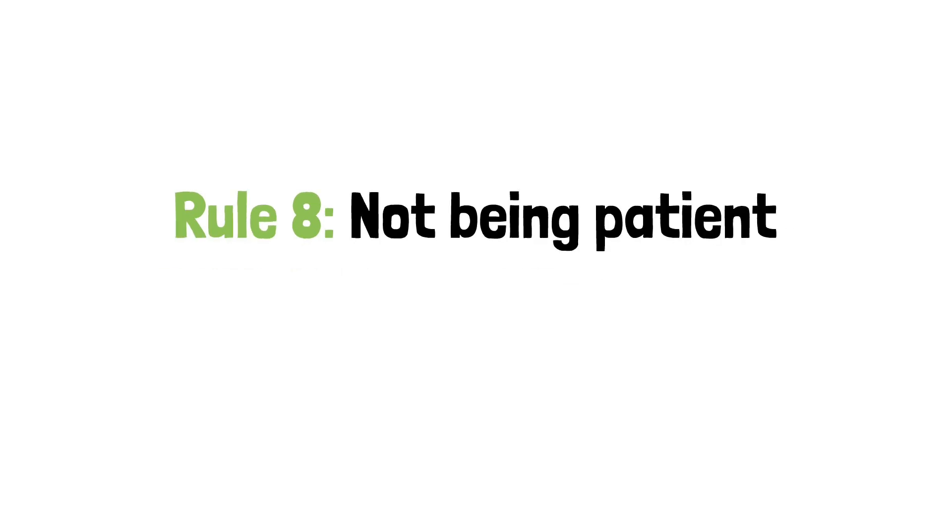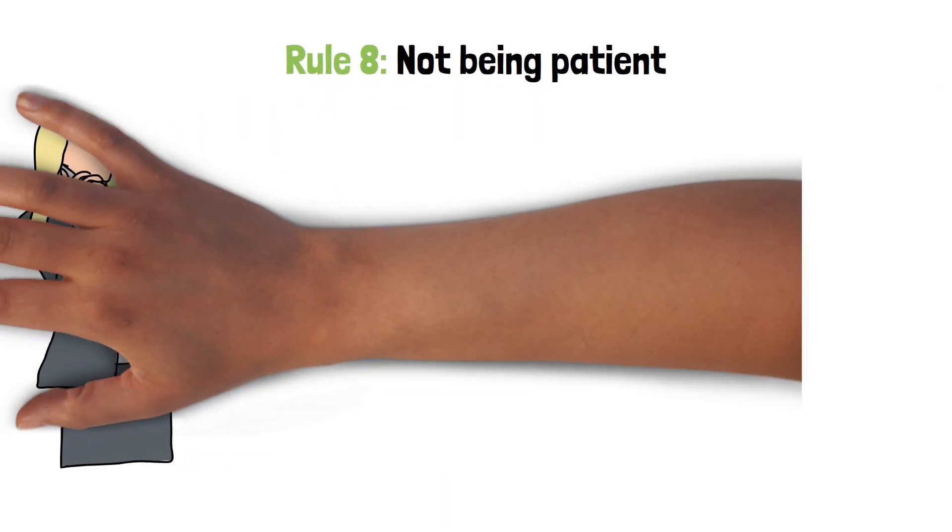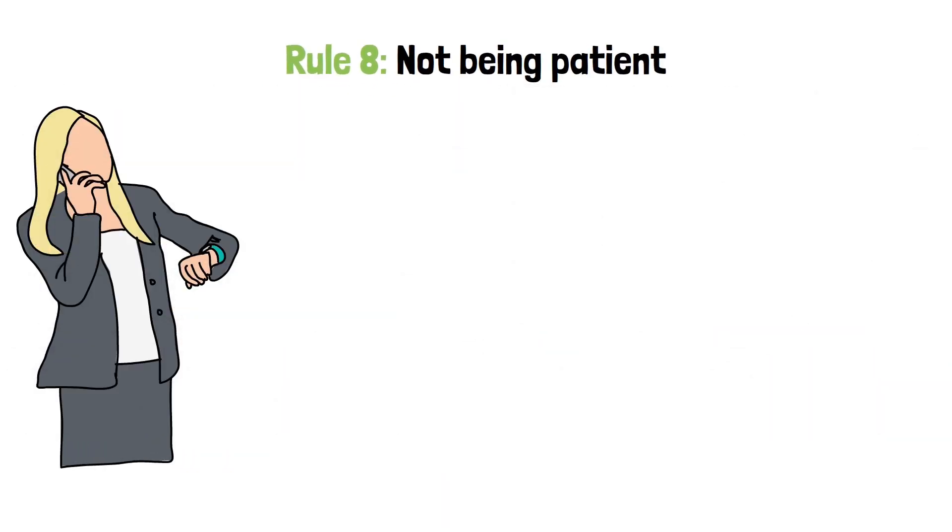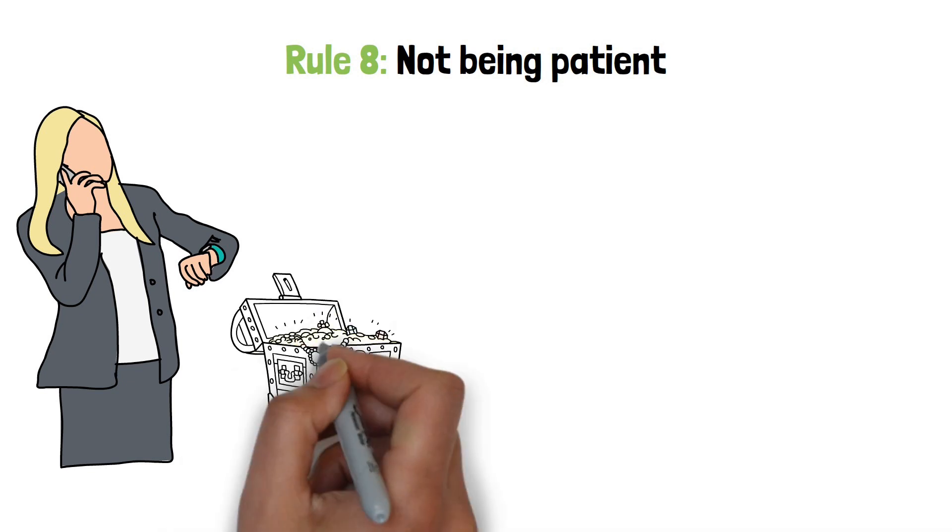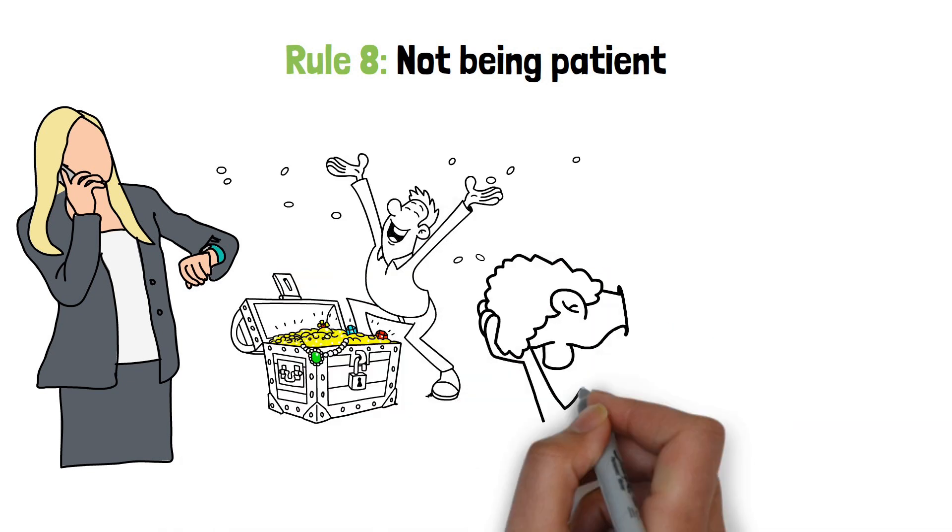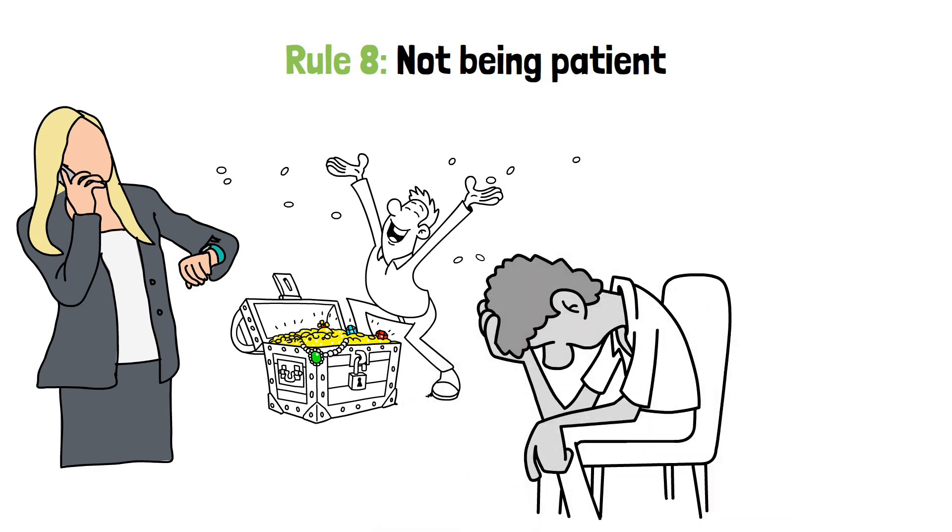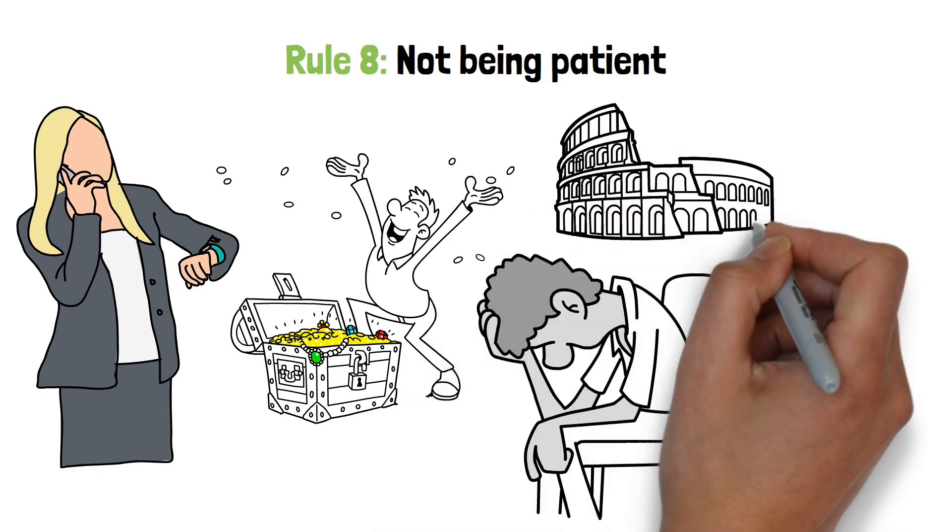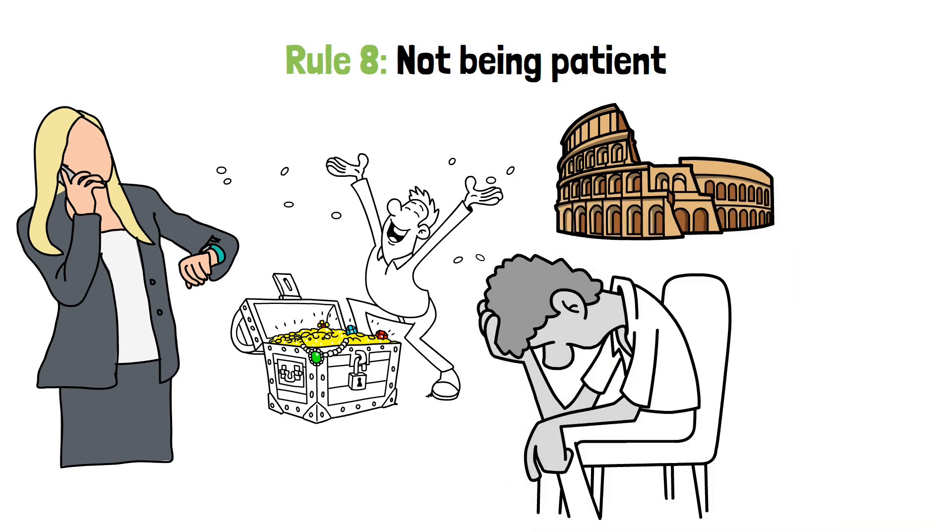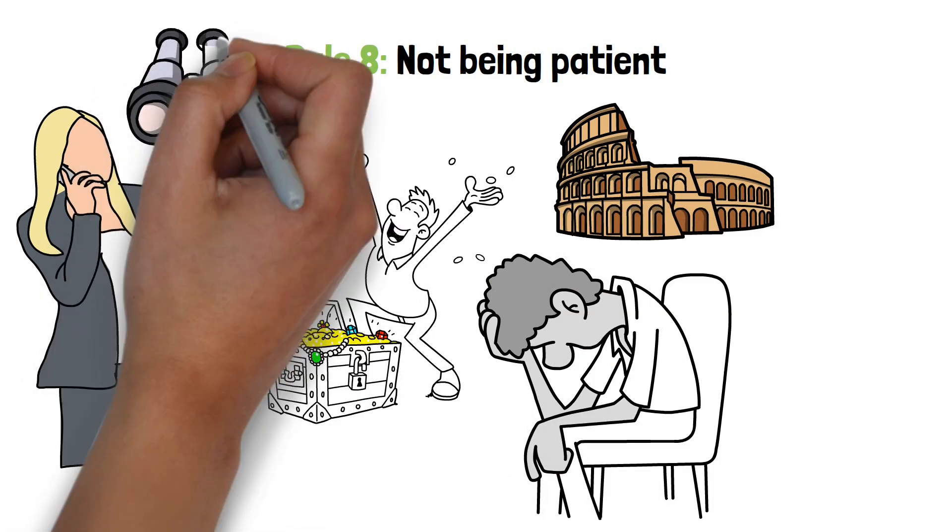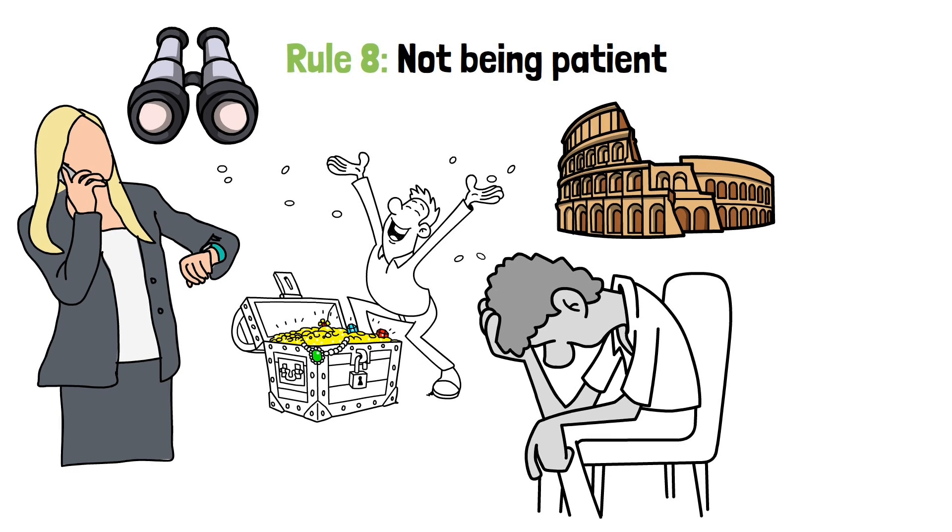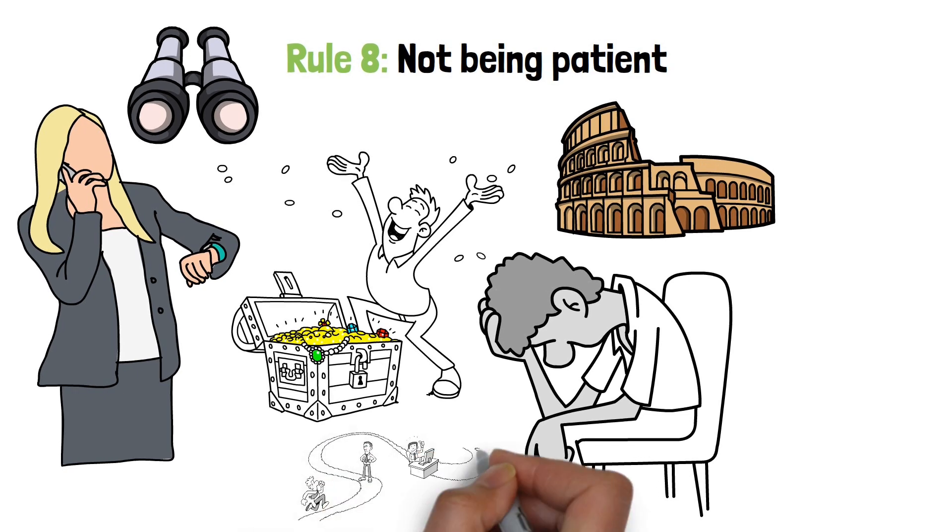Rule 8: Not being patient. In the realm of personal finance, patience is a virtue. Building wealth takes time. It's not a get-rich-quick scheme. But if you're not patient, you're likely to give up before you achieve your goals. You'll become discouraged by the slow pace of progress and abandon your efforts altogether. So remember, Rome wasn't built in a day, and neither is wealth. Be patient, stay focused, and keep working towards your goals.